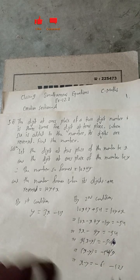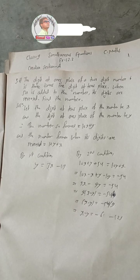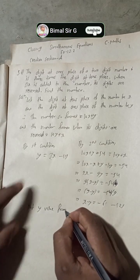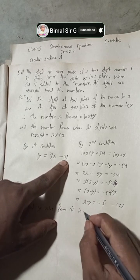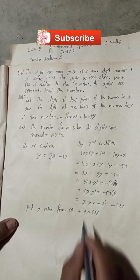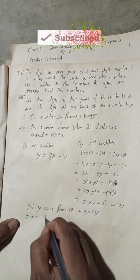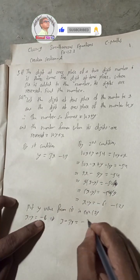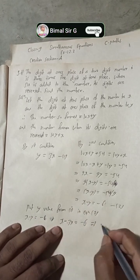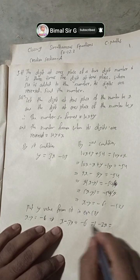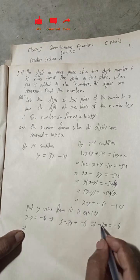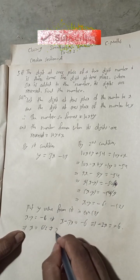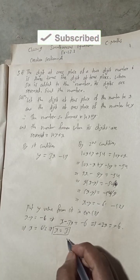Now we solve these equations. Putting the value of y from equation 1 into equation 2: x minus y equals minus 6 becomes x minus 3x equals minus 6. So minus 2x equals minus 6, which implies x equals 3.